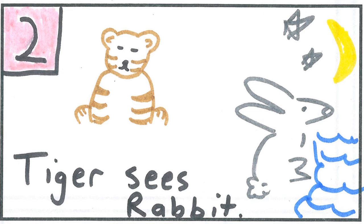In block number two, I decided to show the tiger seeing the rabbit. I drew a rabbit, a tiger, the moon, the stars, and some water. I also wrote, tiger sees rabbit.